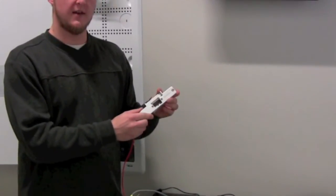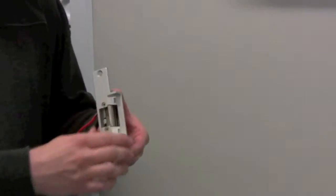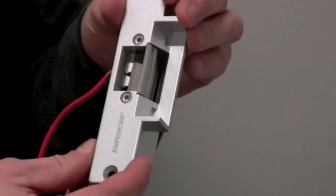Secondly is the electronic door strike. When it receives an electric current from the card reader, it unlocks. Magnetic locks are another option that could be used.